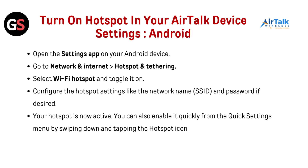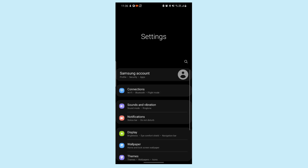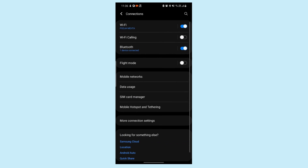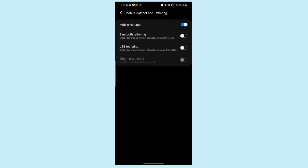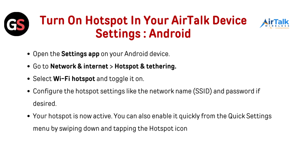To turn on the hotspot on your Airtalk Android device, open the Settings app and go to Network and Internet, then Hotspot and Tethering. Select Wi-Fi Hotspot and toggle it on. Configure the hotspot settings like the network name, SSID, and password if desired. Your hotspot is now active. You can also enable it quickly from the Quick Settings menu by swiping down and tapping the hotspot icon.